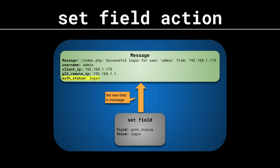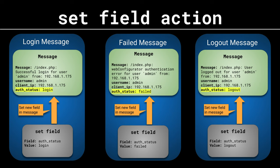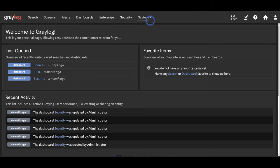Going back to our authentication message, we did extractor work to get the username and client IP, but now I want to classify this message further. I want to standardize a new key value pair that I'll add to every authentication message across all my servers and devices sending logs into Graylog. That way I can easily search for this key value pair to view only the messages I care about. For authentication messages we generally have three classifications: login, logout, and failed. The key will be auth_status and the value will change depending on the type.